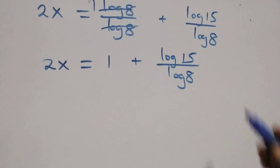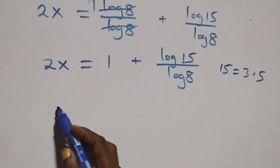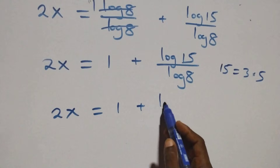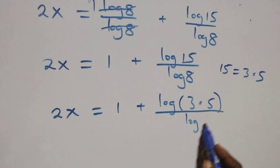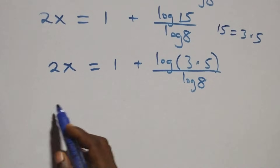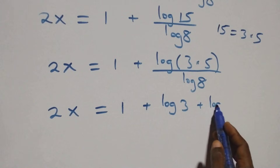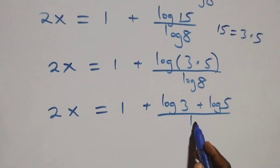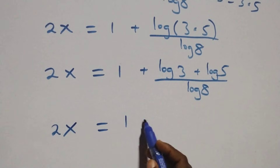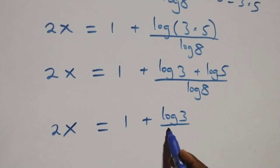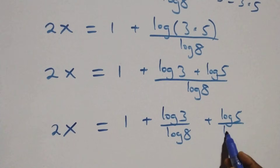Next, we write 15 as 3 times 5, and applying the product rule of logarithms we have log 15 equals log 3 plus log 5. So 2x equals (log 3 plus log 5) over log 8. Separating this into two fractions gives us 2x equals 1 plus log 3 over log 8 plus log 5 over log 8.